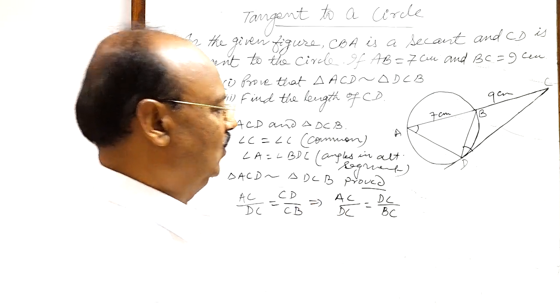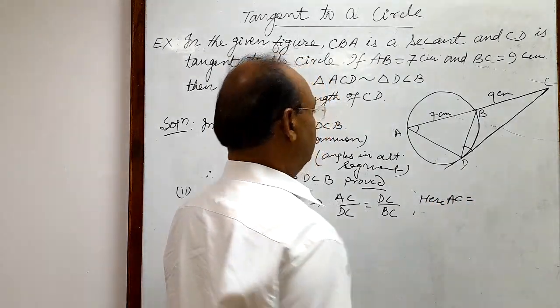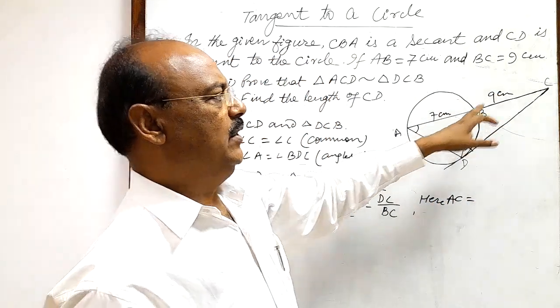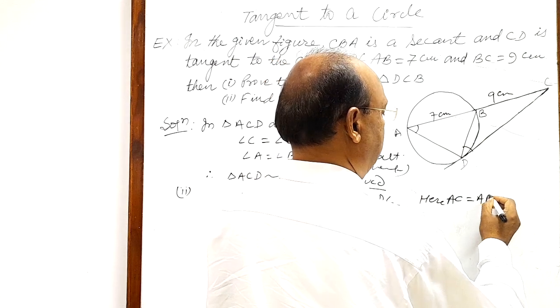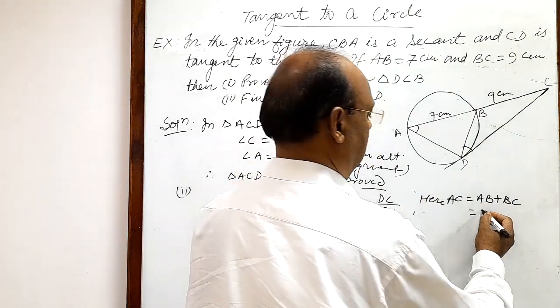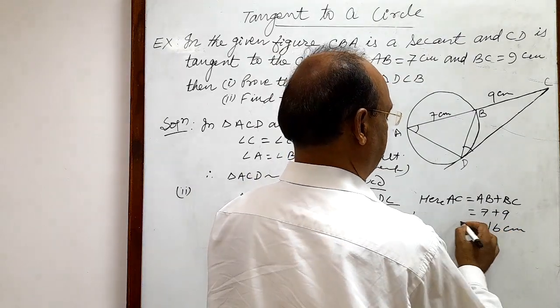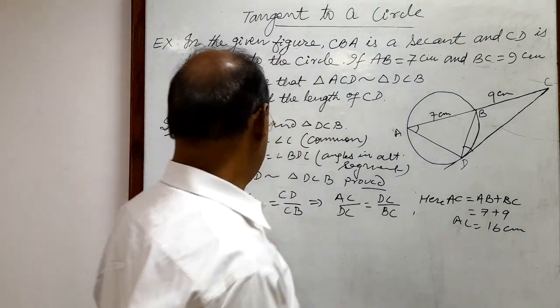Length of this side AC. So here AC is how much? AC is AB plus BC. AC is AB plus BC means 7 plus 9, this is equal to 16 centimeter. AC is 16 centimeter.